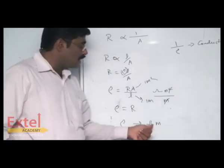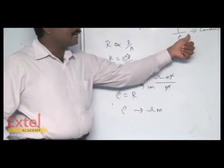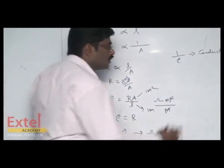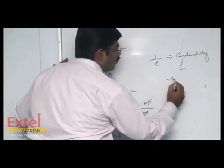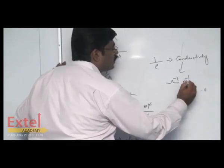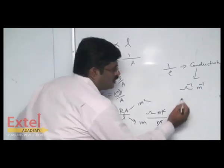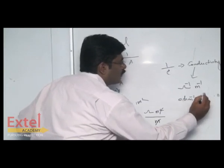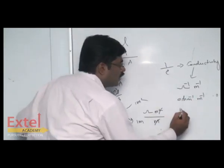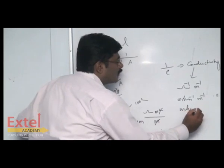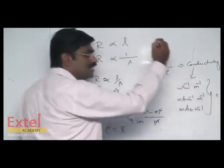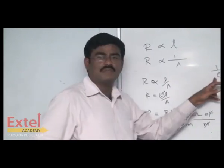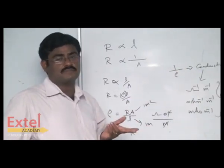The reciprocal of electrical resistivity is called conductivity. The unit of conductivity would be the reciprocal of ohm meter, which can be written as ohm minus one per meter, or mho per meter. We can use any of these equivalent units for conductivity, which is nothing but the reciprocal of electrical resistivity.